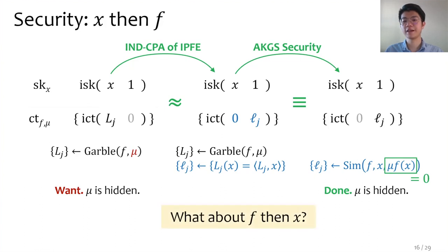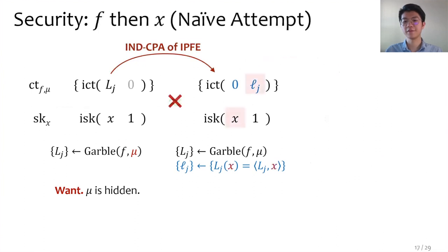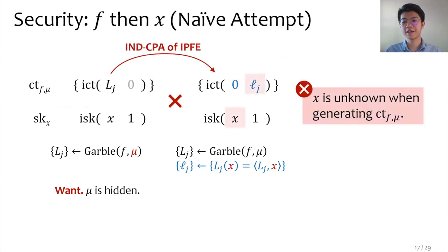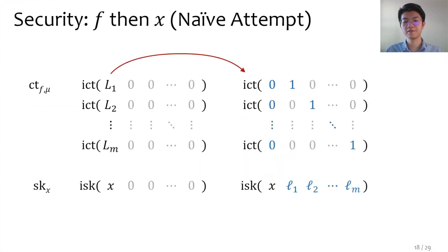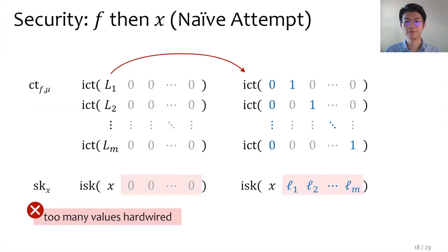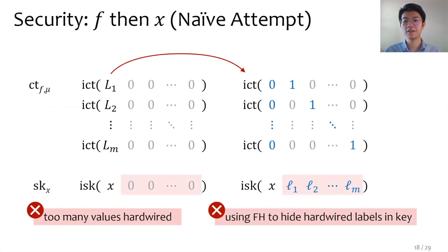What about the adaptive case — f then x? The proof breaks down in the very first step: when generating the ciphertext we do not know x yet, so we cannot compute the labels and cannot hardwire them into the ciphertext. An obvious yet naive attempt is to hardwire the labels in the key instead, putting the labels in the key and ones in different positions in the ciphertext. But this does not work for two reasons: first, we are hardwiring too much information into the key; second, we are resorting to function hiding to hide the fact that labels are hardwired in the key. Either leads to non-succinct keys and defeats our purpose.